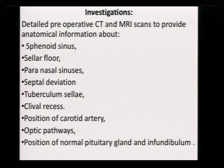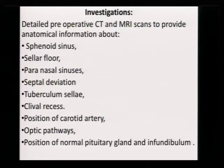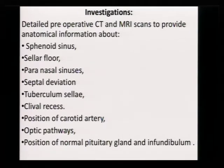You need to study the CT and MRI in detail and know the anatomy very well before you proceed. Study the sphenoid sinus, especially the septa going laterally onto the carotid or onto the optic nerve, the sellar floor, paranasal sinuses, any septal deviation. Also study the tuberculum sellae, clinoid recess, position of the carotid artery — if the space between two carotids is very small it is difficult. Identify the optic pathway and the normal pituitary, although when the tumour is very big it may not be possible, but still during surgery you can find the normal pituitary gland.